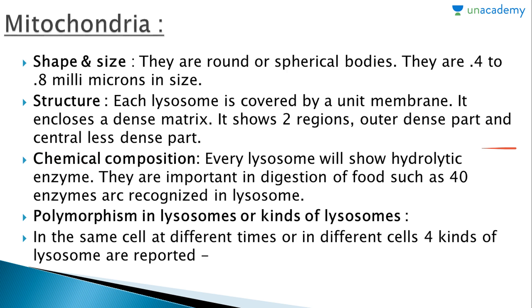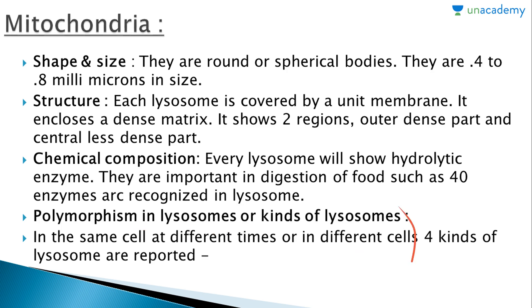Next we have chemical composition. Every lysosome will show hydrolytic enzymes, which are important in the digestion of food. About 40 enzymes are recognized in lysosomes till now. Regarding polymorphism, there are different kinds of lysosomes in the same cell at different times or in different cells at the same time. Four kinds of lysosomes are reported in total.